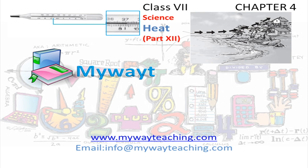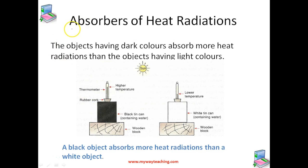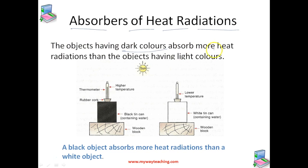This video is brought to you by MyWayTeaching.com. Now we are studying absorbers of heat radiations. The amount of heat which an object can absorb by radiation depends on the color of the object. Objects which have dark colors absorb more heat radiations than objects having light colors.